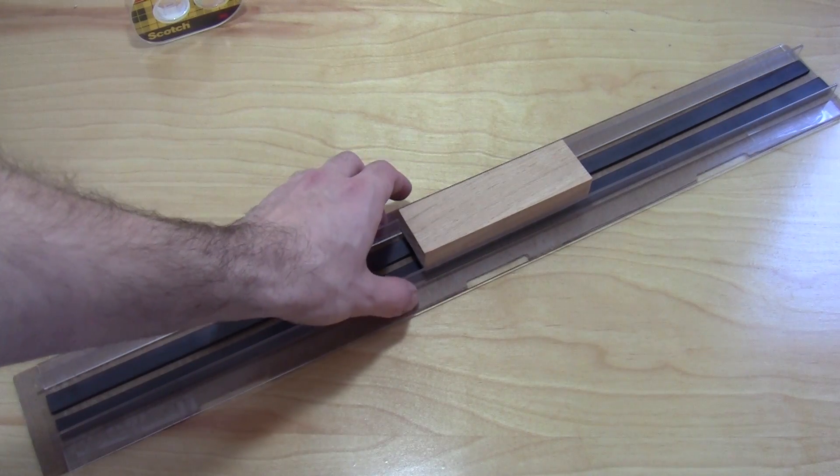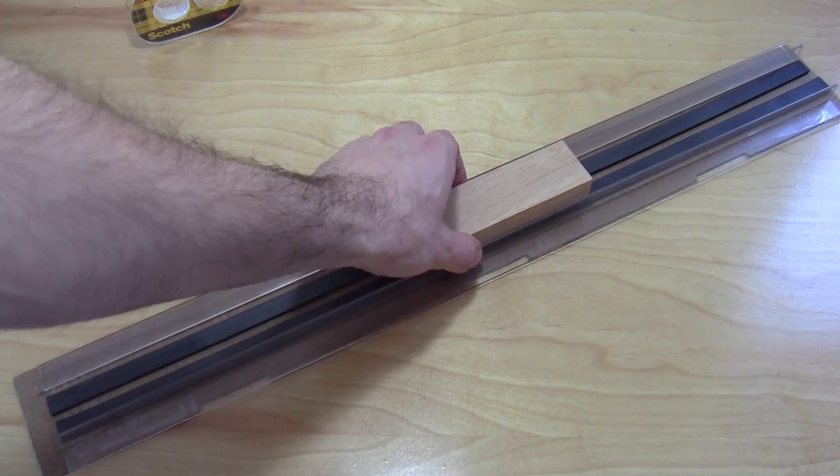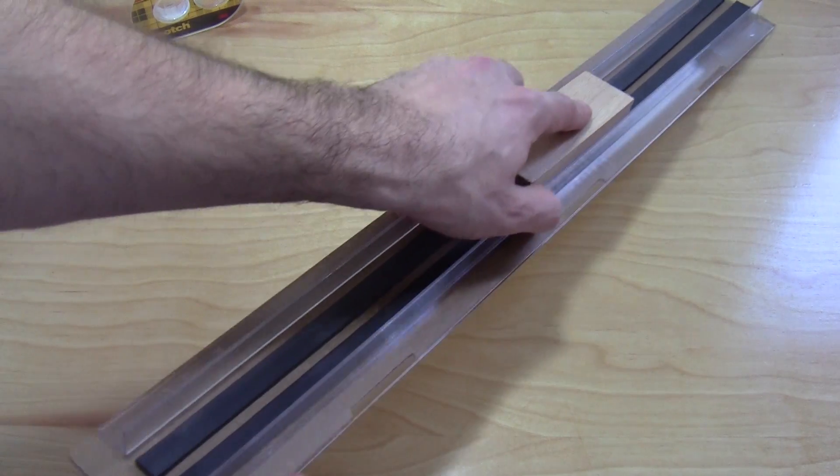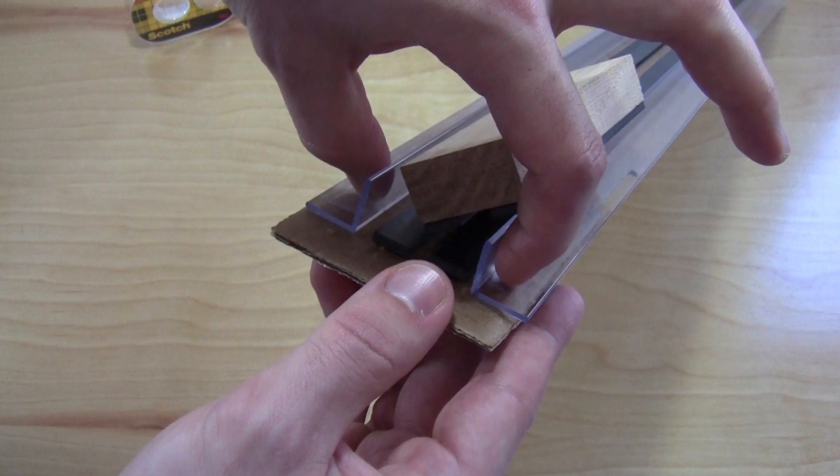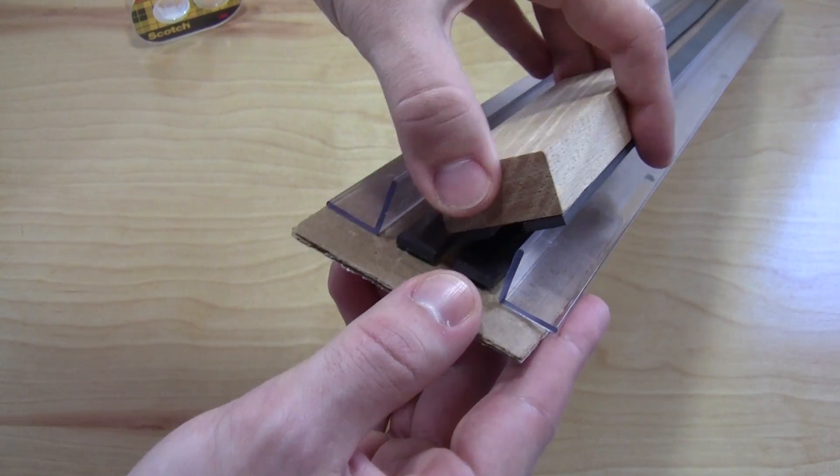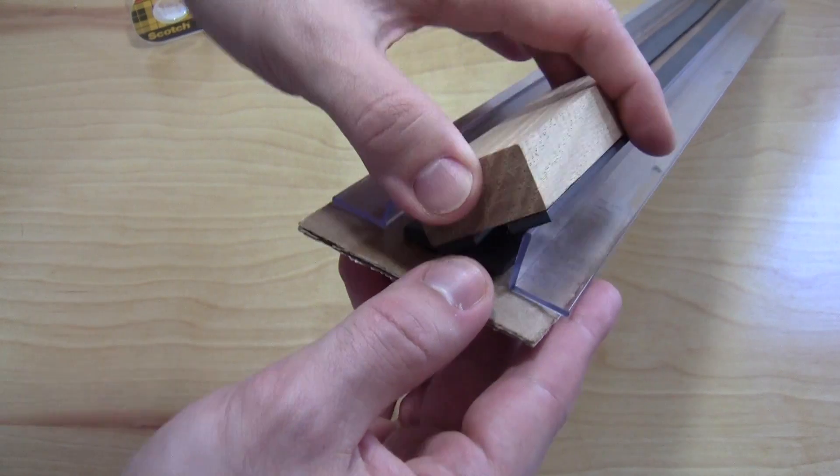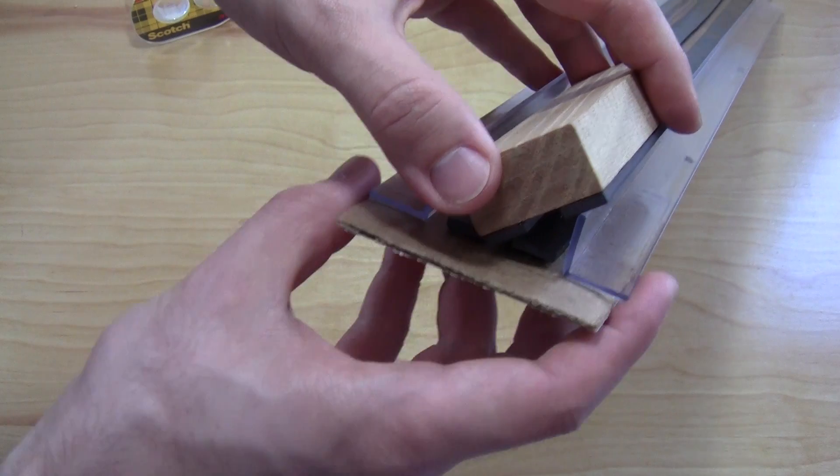If it gets stuck right away that means your angles are too close together and causing too much friction on the train. If your train tilts to one side like this then your angles are probably too far apart. That's allowing too much wobble room for the train and allowing one of the magnets to pull it down like that.